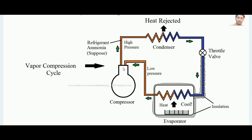The refrigerant used in the vapor compression cycle can be any suitable substance. For example, ammonia is a substance that can act as a refrigerant — it can absorb heat in the evaporator when at low pressure, and when coming out of the compressor at high pressure, it can reject heat to the surrounding. This way, it continuously removes heat from the evaporator and rejects it to the surroundings.